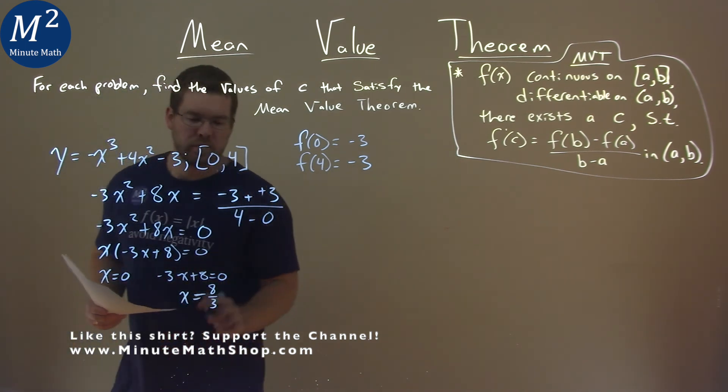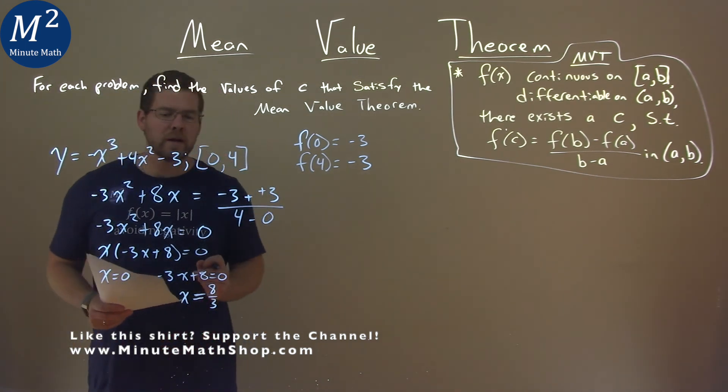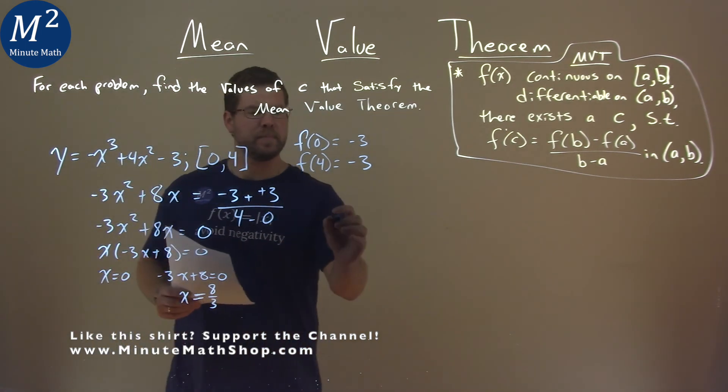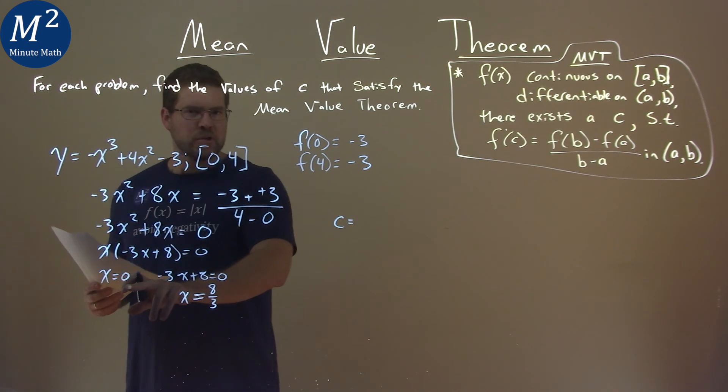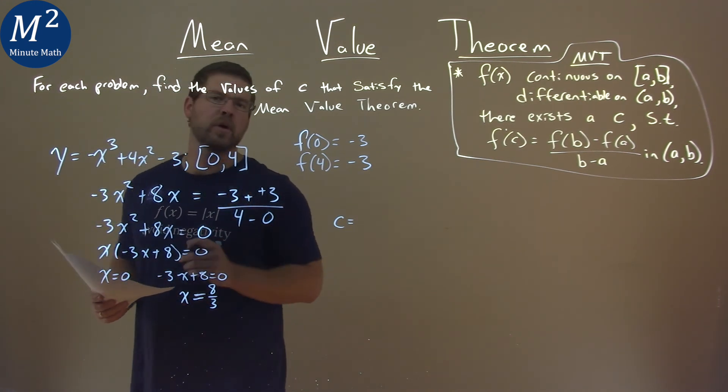So we have two x values here, but only one of them is actually our c value. Now, which one is that? Well, 0 has an issue. 0 is an endpoint of our interval.